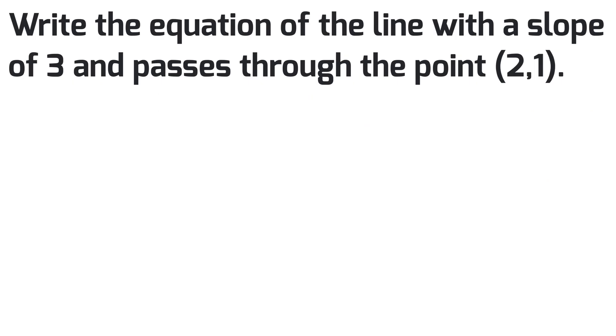The first example tells you to write the equation of the line that has a slope of 3 and passes through the point (2,1). So what I'm going to do first is identify what I have in my question.